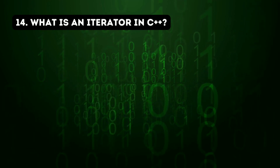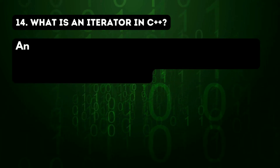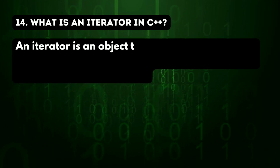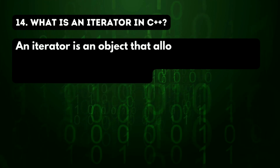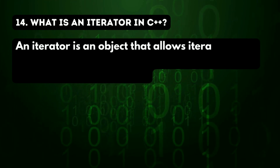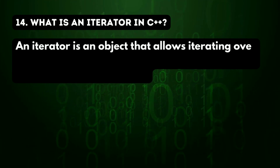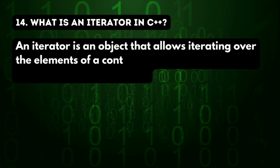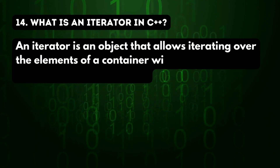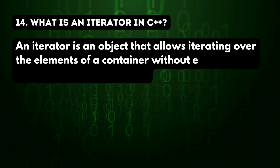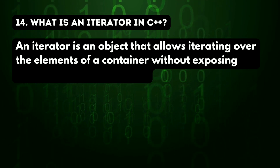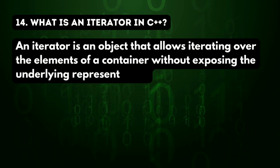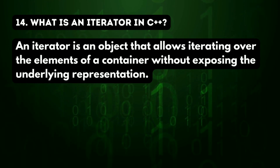14th question: what is an iterator in C++? An iterator is an object that allows iterating over the elements of a container without exposing the underlying representation.